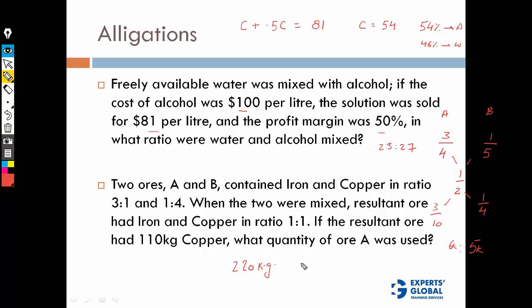11K = 220. Total is 220 kg. 6K and 5K are the ratio, which turns out to be 220. Therefore K = 20 kilograms. Then ore A is 6K, which is 120 kg.